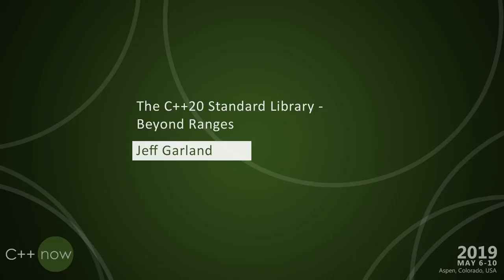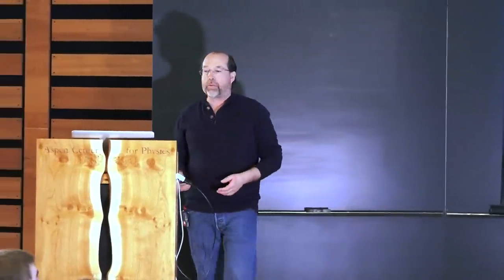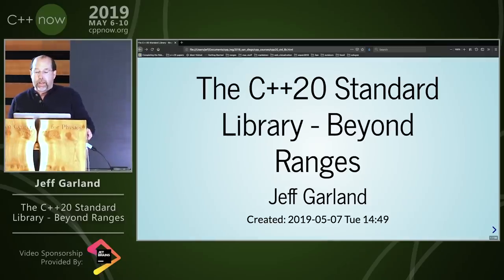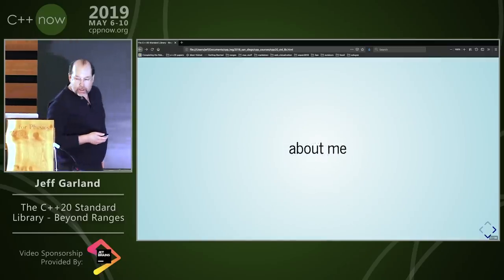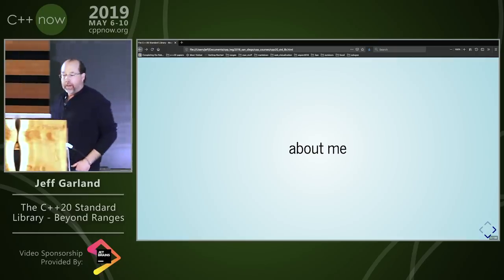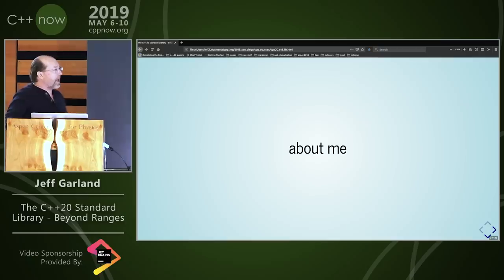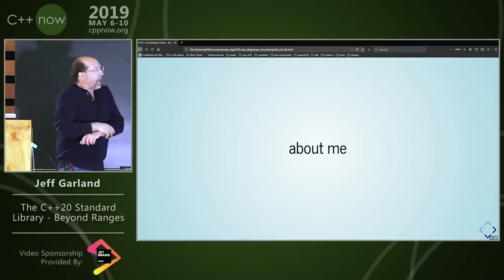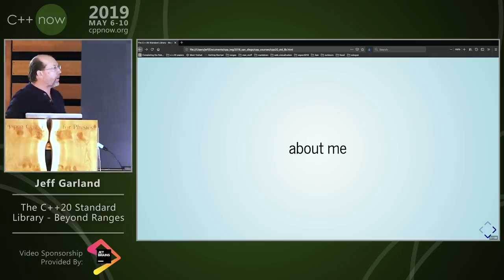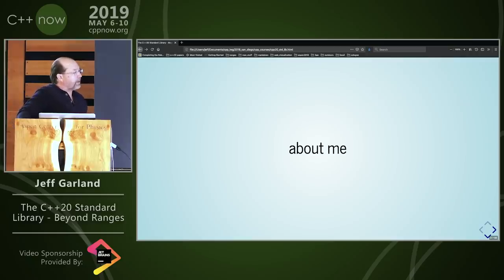I'm Jeff Garland. This presentation is about the C++20 standard library — mostly not about ranges, and there's a bunch of other topics that aren't going to be talked about as well. I'm going to tell you what I didn't talk about so you'll at least have some pointers. I've been here for every one of these conferences, and recently I've been able to get back into working on standards. Back in 2007 I helped with the original chrono presentation and documentation, so I'm getting back into it now.